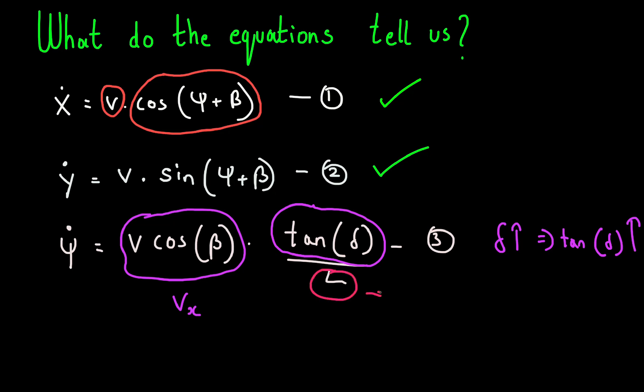And last but not the least, we have our wheelbase in the denominator. So if we keep everything else constant, that is fix the longitudinal velocity, fix our steering angle, this equation tells us that a vehicle with a larger wheelbase will yaw less. In other words, it's harder for longer vehicles to yaw. This is again probably consistent with your intuition.